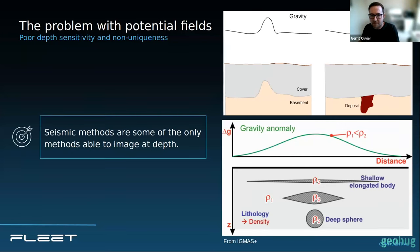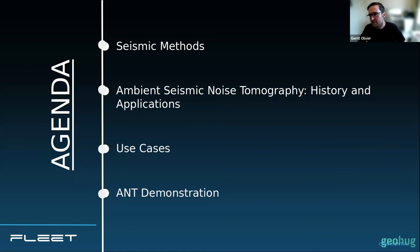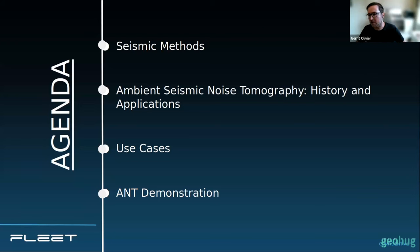As many of you would know, seismic methods are some of the only geophysical methods that can image at depth. There are other exceptions, like magnetotellurics or electromagnetic surveys, but seismic methods are very underutilized thus far in mineral exploration. Today I'm going to unpeel some of these existing seismic methods and introduce this new method called ambient seismic noise tomography. I'll give a history of where it comes from, show some applications, use cases for mineral exploration, and then a live demonstration.